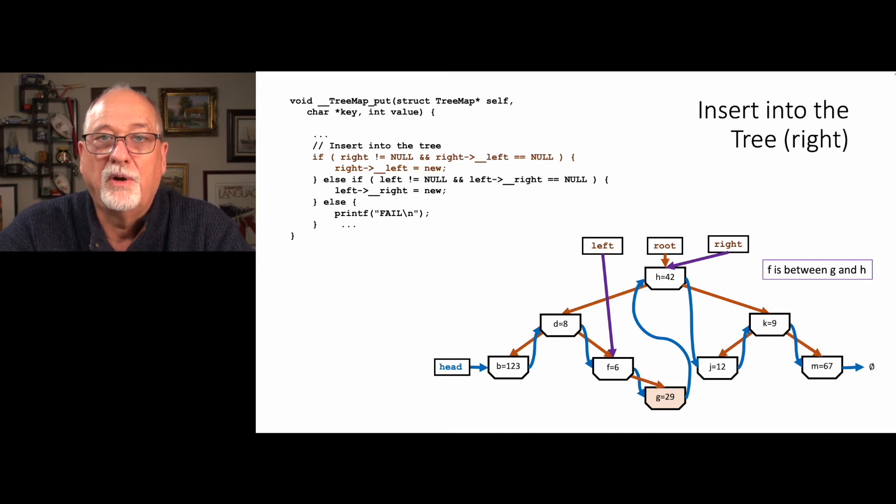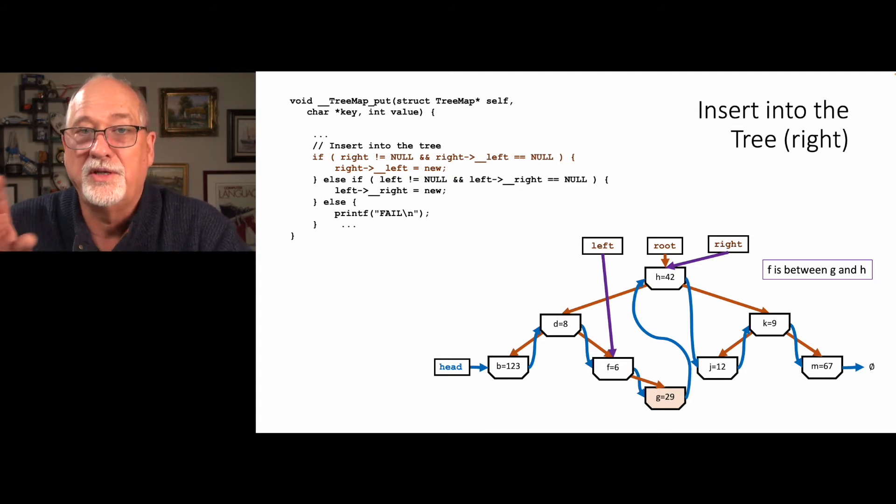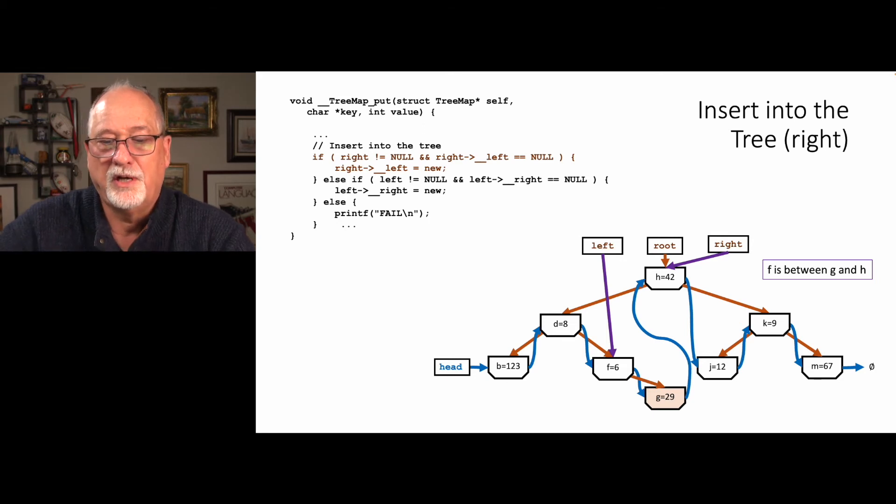Now you look - what we have done is we have left and right as just temporary variables that we had during this tree map put code. But if you look at this carefully, we have a correctly formed linked list that's sorted in order, and we have a correctly formed tree. We use the tree to get to f fast, and we use left and right so that once we got to the right place, which was to the right of f, we could just hook it into that linked list with no additional cost. See how pretty it is.